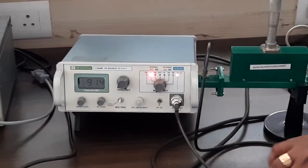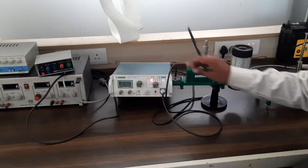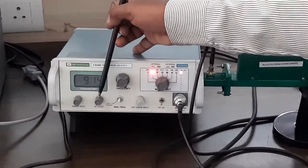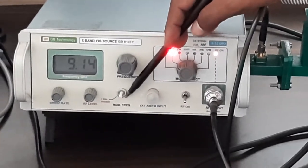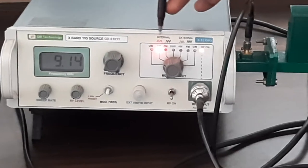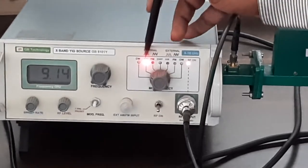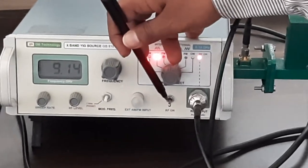These are the microwave frequencies which you will be transmitting. Speed you keep at minimum. RF level you keep at maximum. The modulating frequency you keep at preset one kilohertz. You will be using the internal modulation. Under that you will be utilizing the AM modulation. And then you switch on the RF.